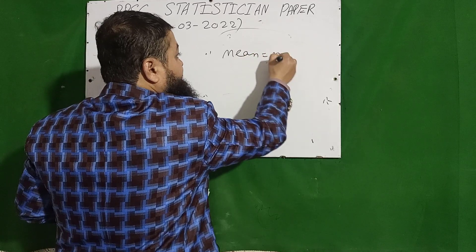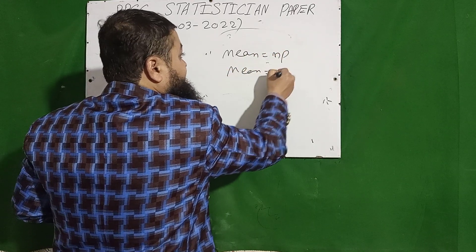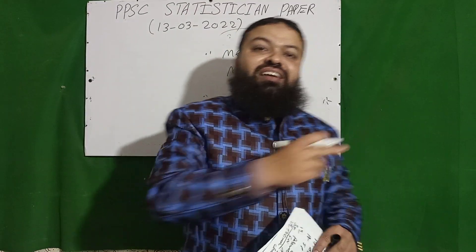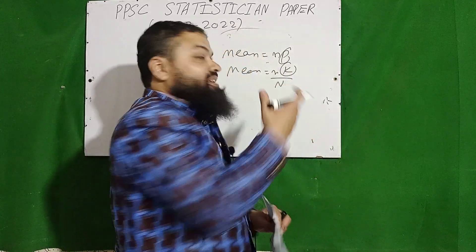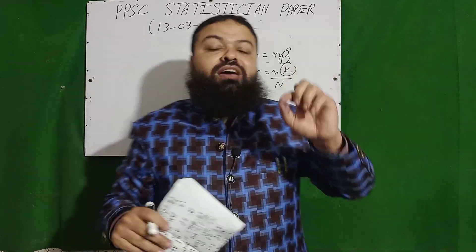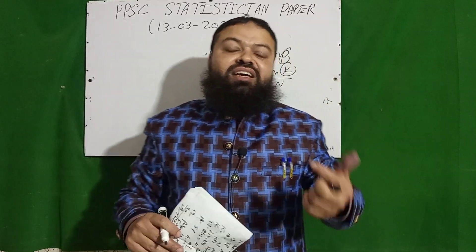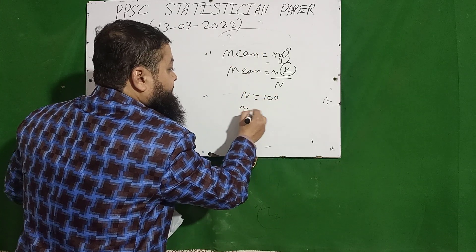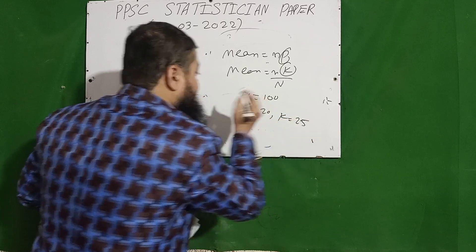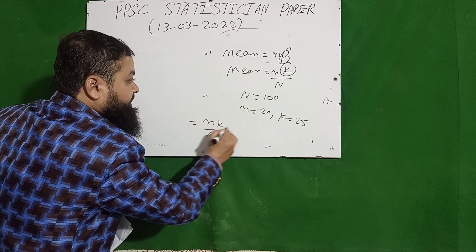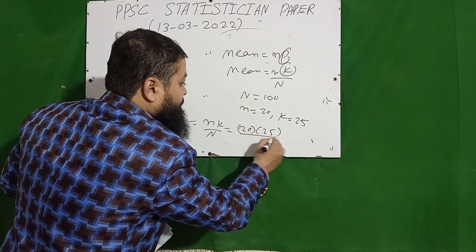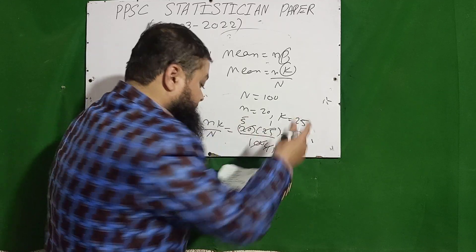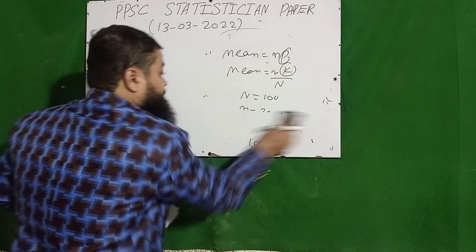The next question: the mean of the hypergeometric distribution. The mean of the binomial is np; the mean of the hypergeometric is also n·p, where p = K/N. Here K is the number of favorable elements, N is the total population, and n is the sample size. For example, if N = 100, n = 20, and K = 25, then mean = n·K/N = 20×25/100 = 5.